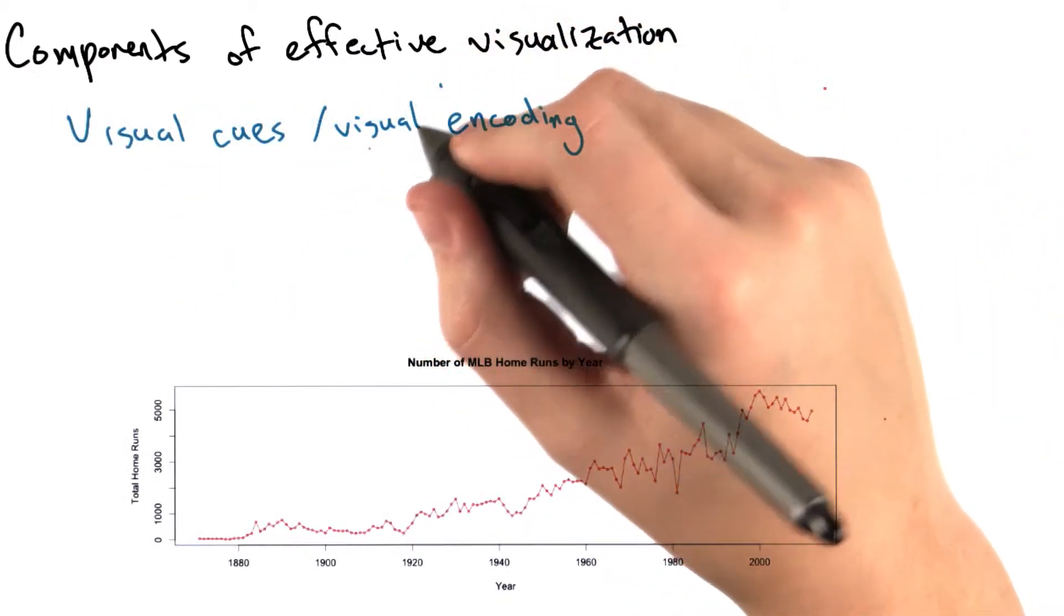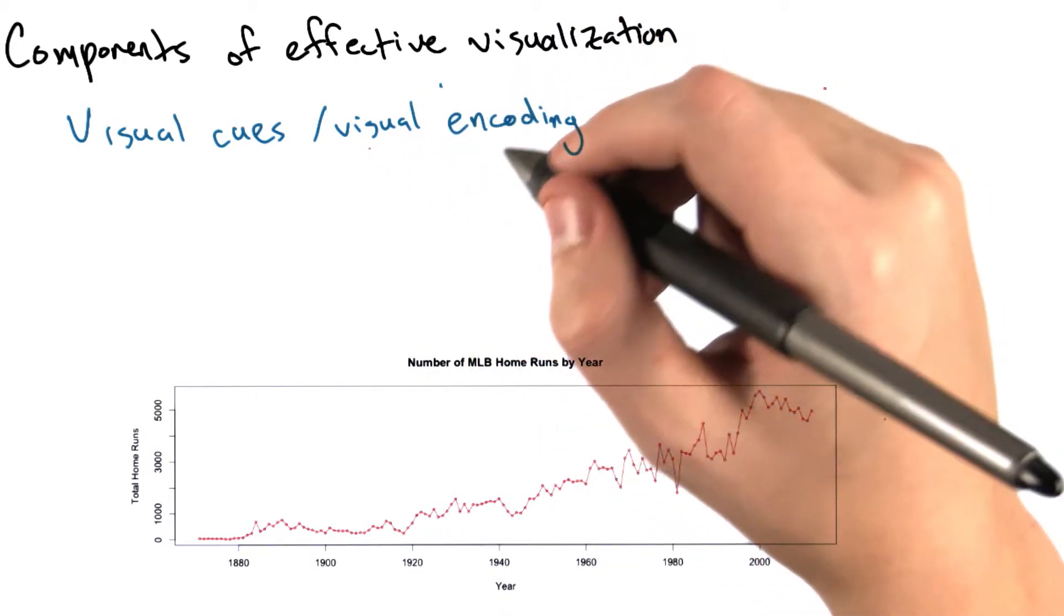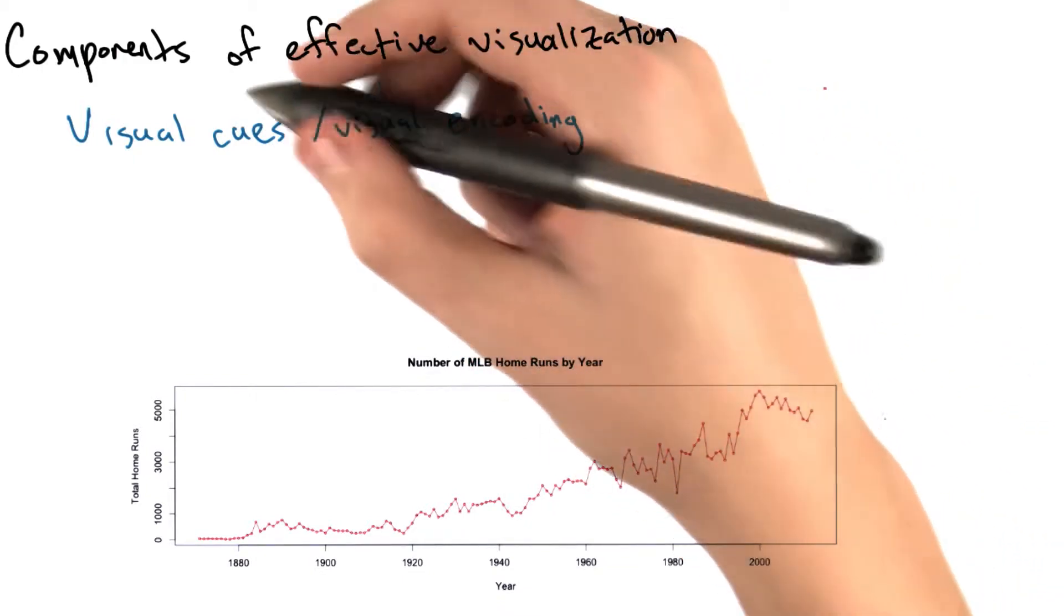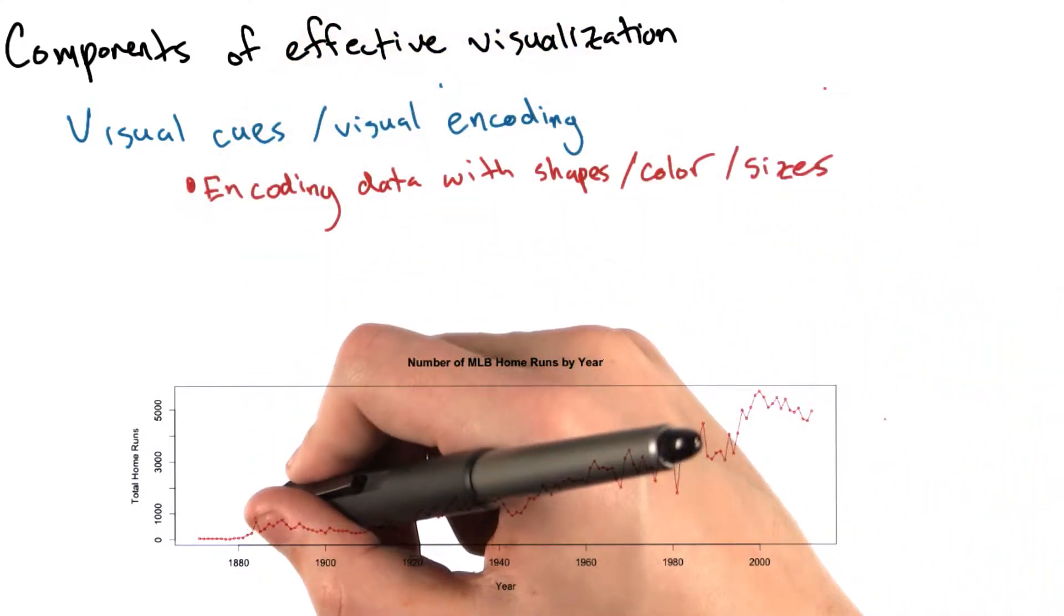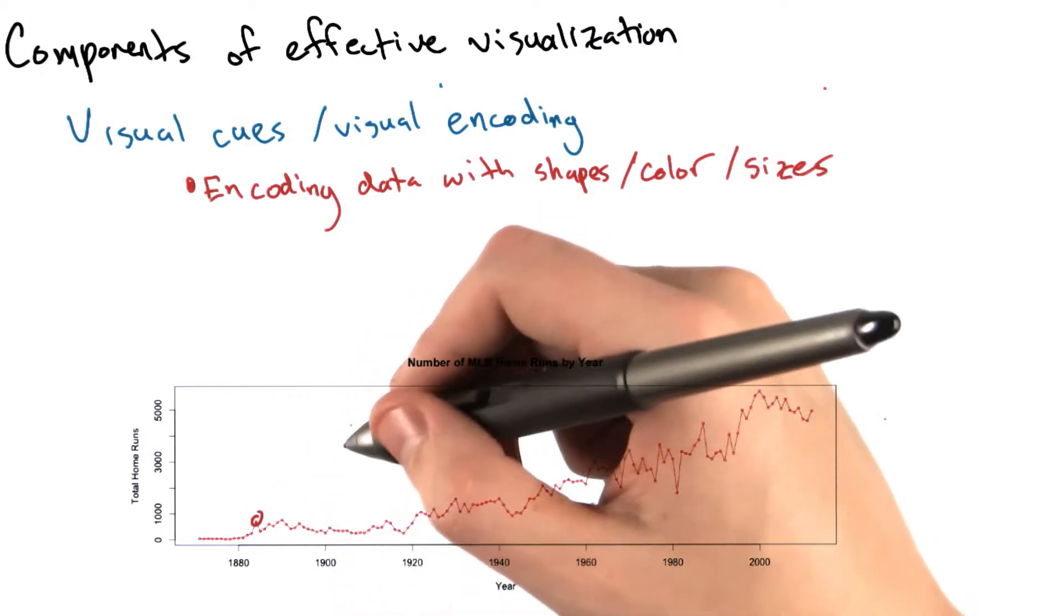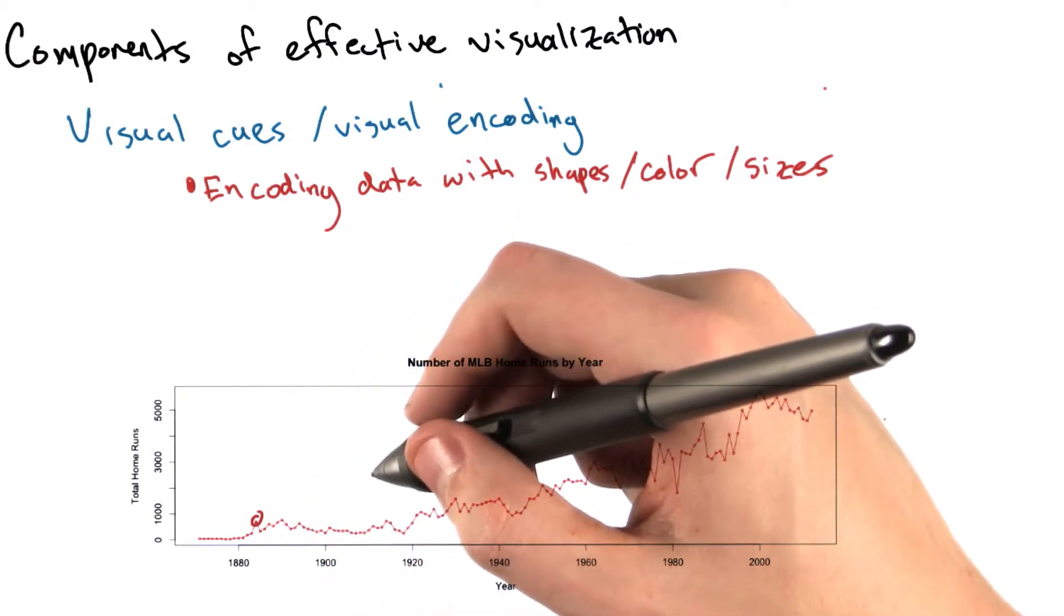The first ingredient is visual cues, or visual encoding. This is encoding data with shapes, colors, and sizes. For example, if we look at this chart, each point shows the number of home runs in a given year, and the lines connecting the points give us some sense of the rate of change of home runs hit from year to year.